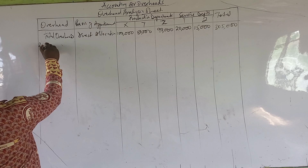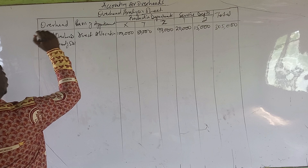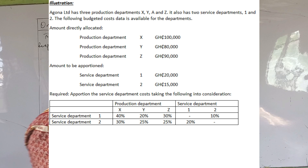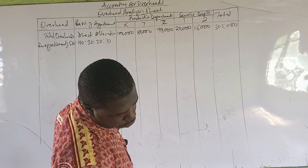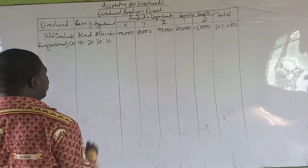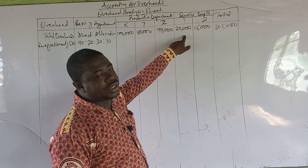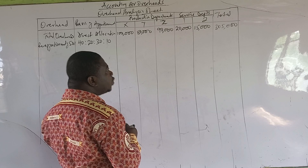Reapportionment of service department 1. The ratio is 40 is to 20 is to 30 is to 10. So 40% of 20,000 is 8,000 — that goes to department X. Then 20% of 20,000 is 4,000 for department Y. We put the 20,000 in brackets as that is what we are sharing.